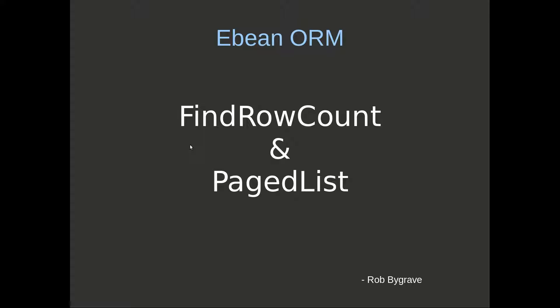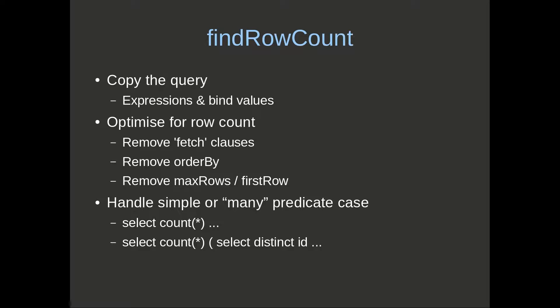Hi, I'm Rob and we're going to look at find row count and paged list queries. Find row count takes a copy of the query with expressions and bind values and then optimizes that for row count. It removes the fetch clause, order by clause, and max rows / first rows. There are two cases of count star queries it produces: a simple case and a more interesting case when there's a many predicate involved.